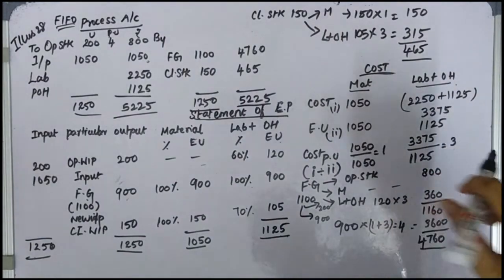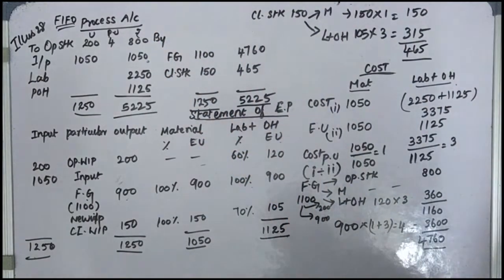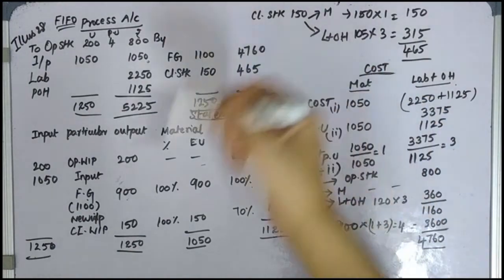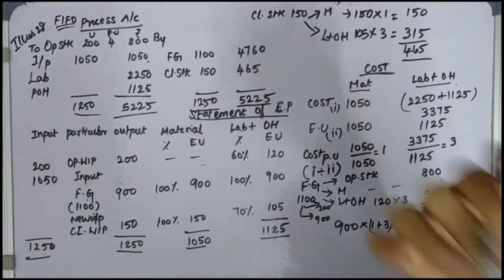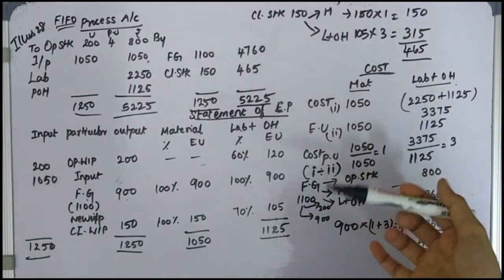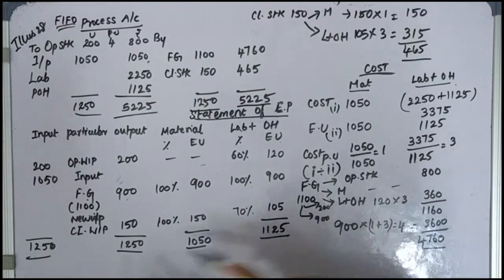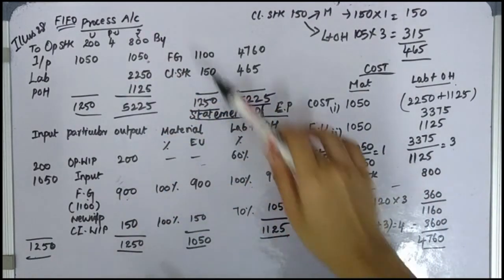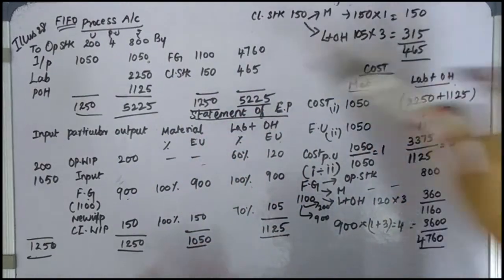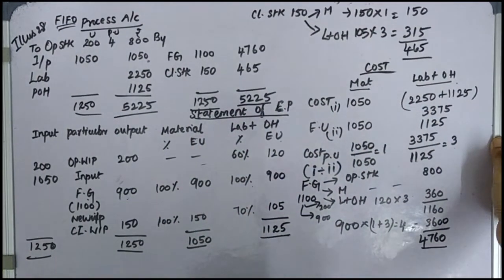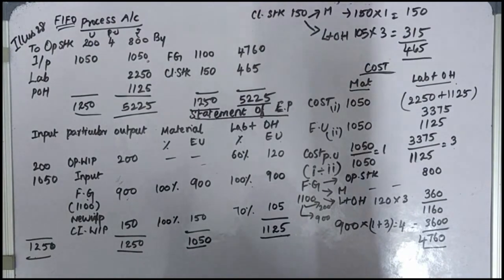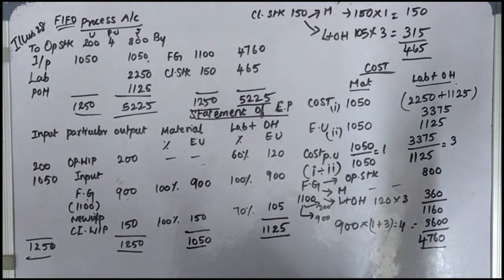We have now completed the FIFO method for the equivalent production statement. Next, we will use the simple average method with the same changes. The pattern is the same but there are changes in the cost calculations. Simple average method is the next section.